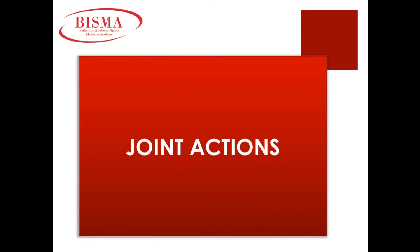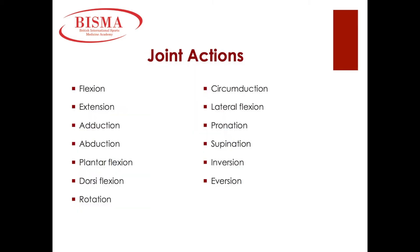Joint actions are terms used to explain certain movements. Flexion is defined as reducing the angle at the joint, or bending a limb. For example, bending the arm at the elbow — lifting the forearm up — is flexion at the elbow. Extension is to return from flexion, increasing the angle at the joint, or straightening a limb. For example, after a bicep curl, lowering the arm back to the sides of the body is extension.